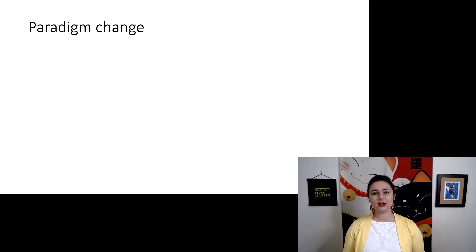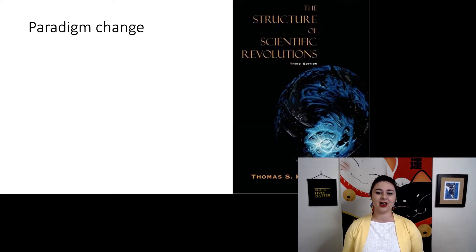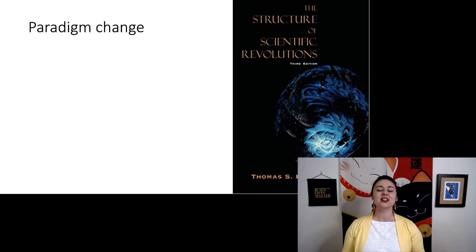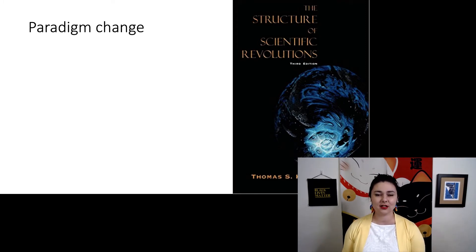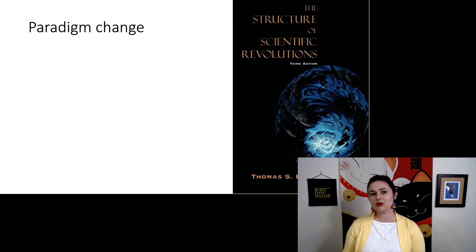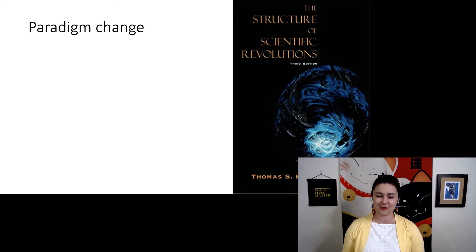Right now, we're talking about something called paradigm change. This comes from a book by Thomas Kuhn, 'The Structure of Scientific Revolutions.' This is a fascinating way to understand the history of science and how science hasn't always been the same way it is today.